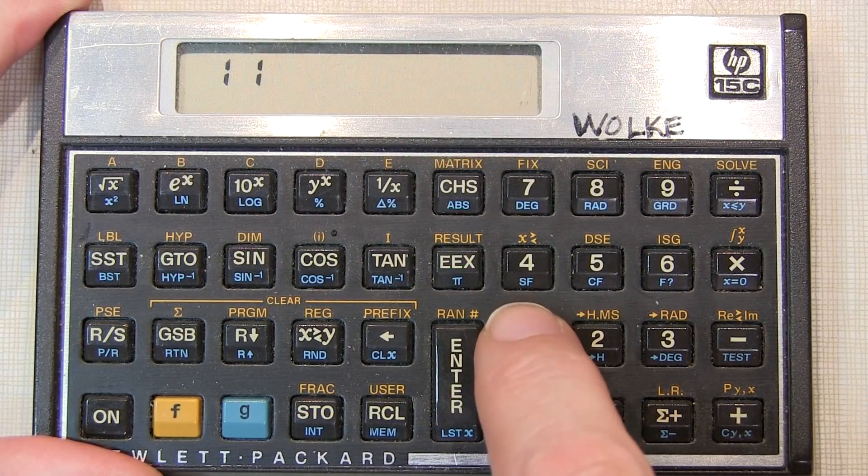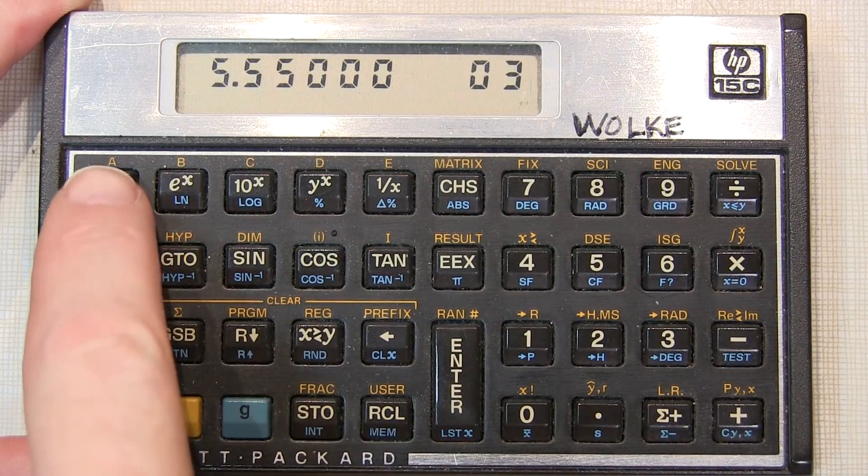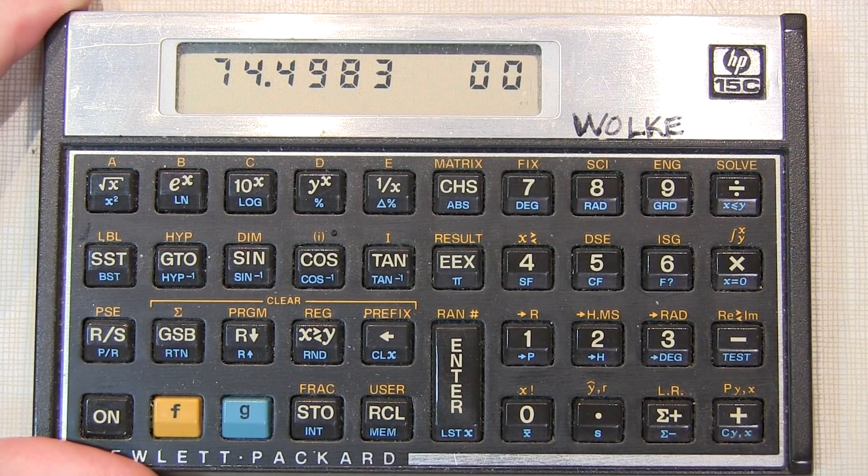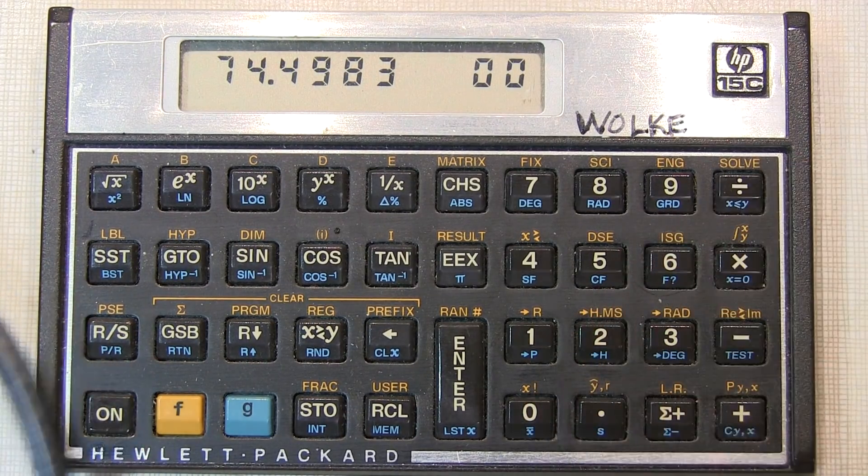So we take our 111 ohm measurement times 50 ohms, and then take the square root of that, and we can see we have 74.5 ohms, so basically this is 75 ohm coax.